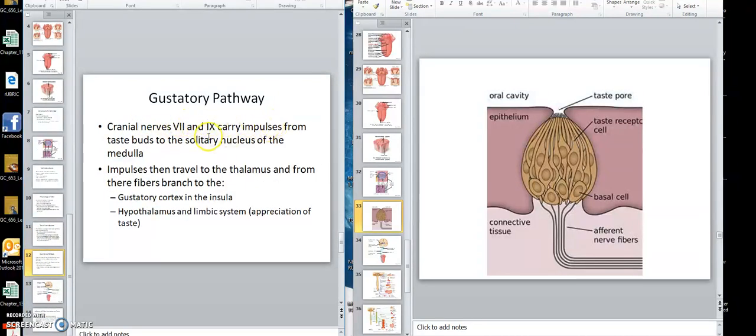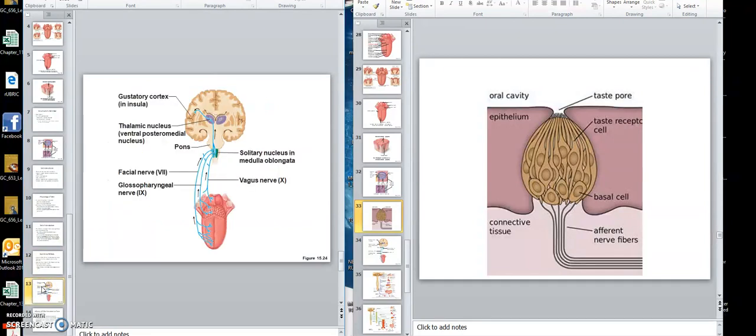Cranial nerves seven and nine carry impulses to the solitary nucleus of the medulla. The anterior part of the tongue, this anterior part of the tongue right there, you can see going up. That's coming off that facial nerve. The posterior is coming off that glossopharyngeal. So, the posterior tongue is nine and the anterior is seven.